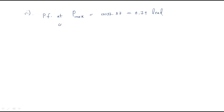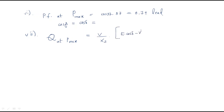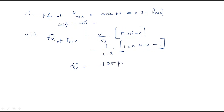For the last point, the reactive power at maximum power: Q = (V/Xs)·(E·cosδ - V). Substituting: (1/0.8)·(1.3·cos90° - 1) = (1/0.8)·(0 - 1). This gives reactive power Q = -1.25 per unit.